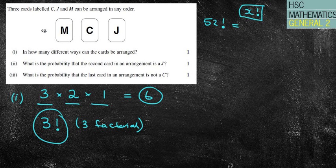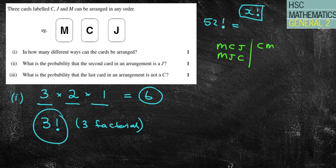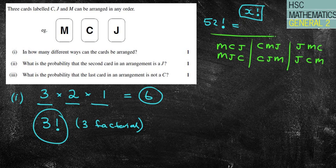The other option too, because we only have six options, you might actually write them out. And this could help us with the other questions. If I pull C out first, C, M, J, or C, J, M. If I pull M out first, M, C, J, or M, J, C. If I pull J out first, J, M, C, or J, C, M, and you can see again, you've got your six options there.